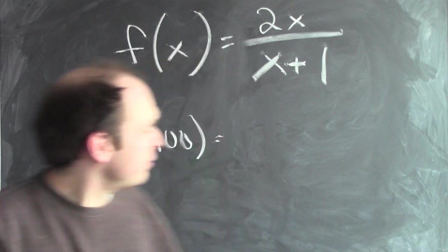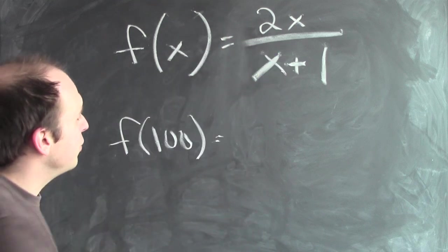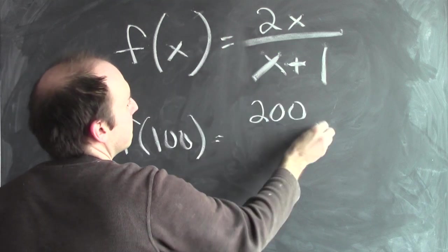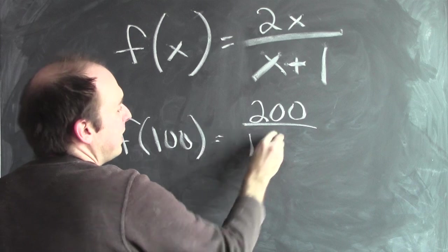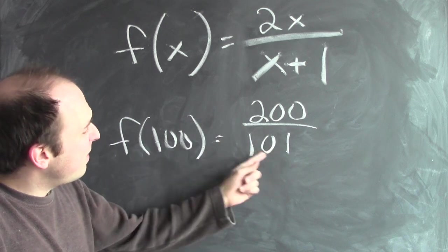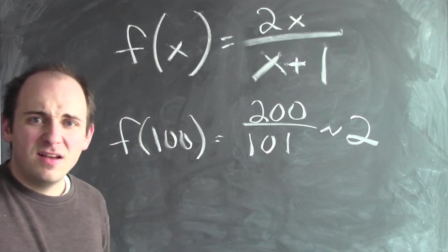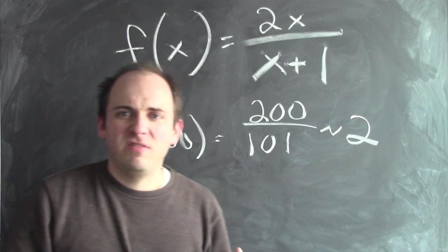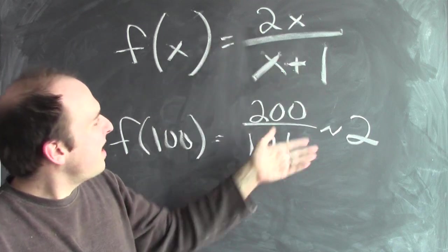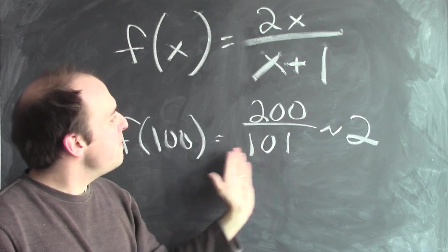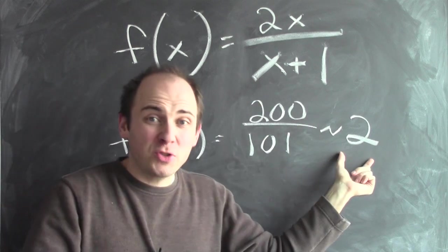Well, that's not too hard to figure out. 2 times 100 is 200, and 100 plus 1 is 101. Now, 200 divided by 101 is pretty close to 2. And there's nothing too special about 100. If I had done this for a million, I would have gotten 2 million over a million and 1, which would be even closer to 2.